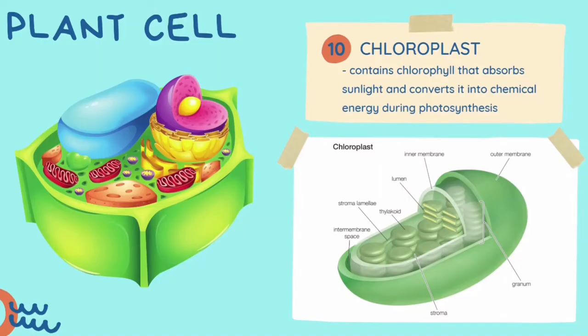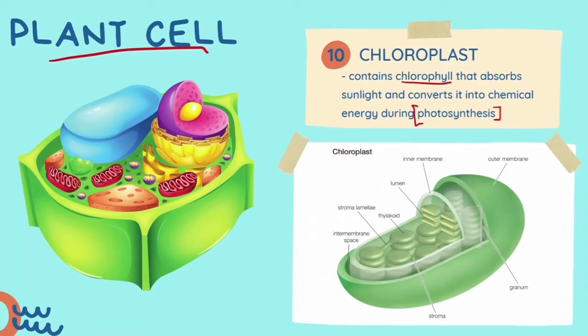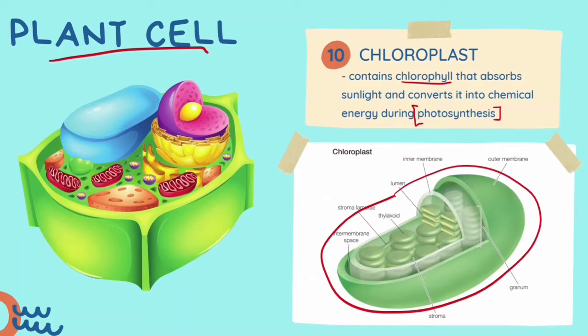Now that we have covered all the organelles in animal cells, it's time to move on to plant cells. Most organelles inside animal cells also exist within plant cells, except for certain ones such as centrioles. Additionally, there are organelles within plant cells that do not exist in animal cells — for example, chloroplasts. Chloroplasts contain chlorophyll that absorbs sunlight and converts it into chemical energy during photosynthesis. The chloroplast is normally oval in shape, has a double membrane and contains chlorophyll pigments inside.